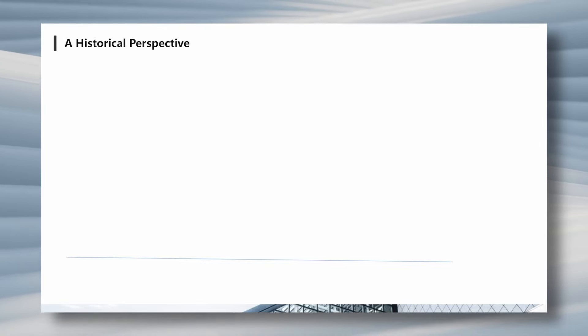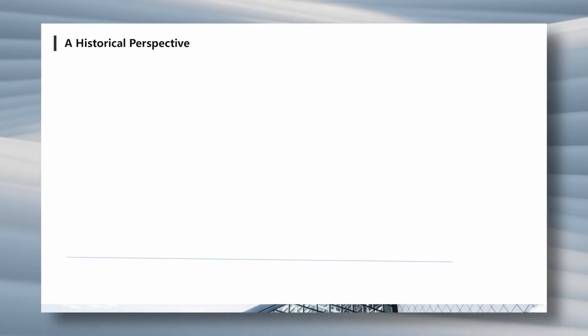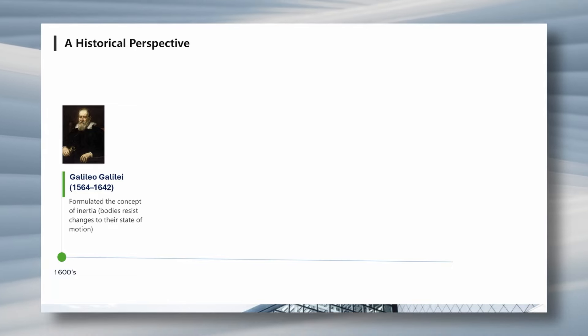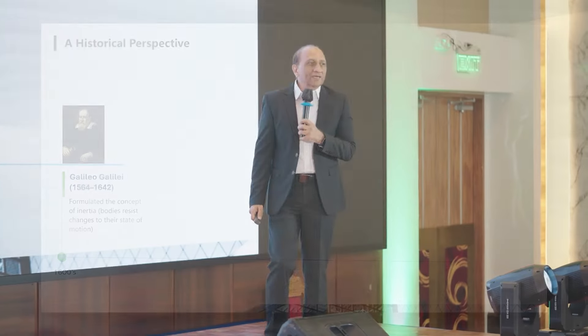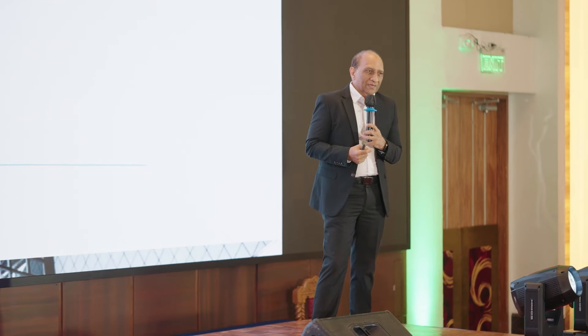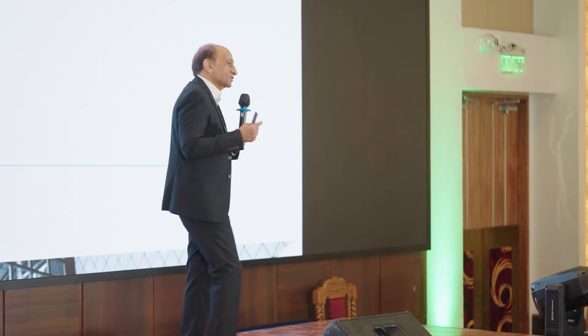From a historical perspective, let's go back to Galileo Galilei in the 1600s. He can be considered the first person who started thinking about physics, structures, and inertia. He didn't really come up with any theories or formulas, but his thinking was very instrumental in starting many discussions later.